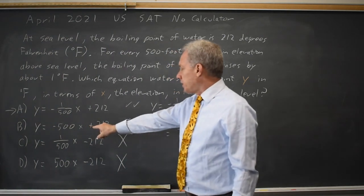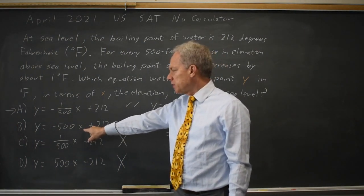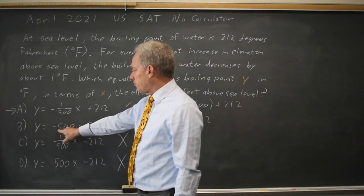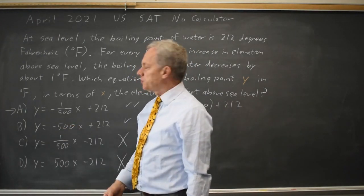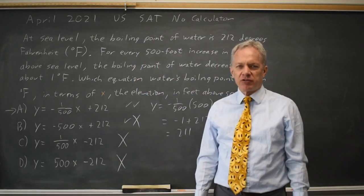Choice B, at an elevation of 500 feet, our temperature should decrease by 1, but we actually decrease by 500 times 500, which is a whole lot more. So choice B does not match at an elevation of 500 feet.